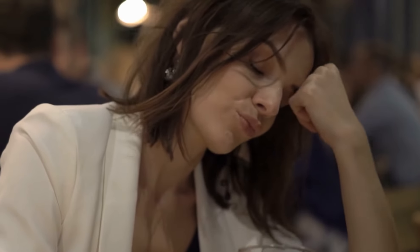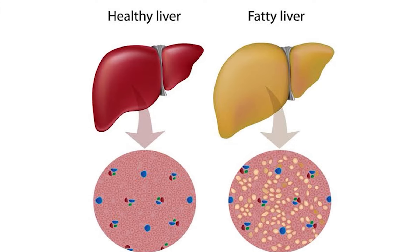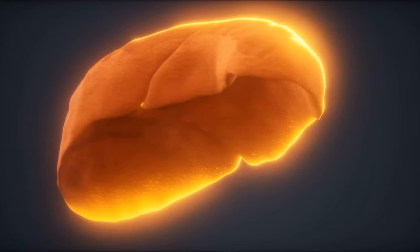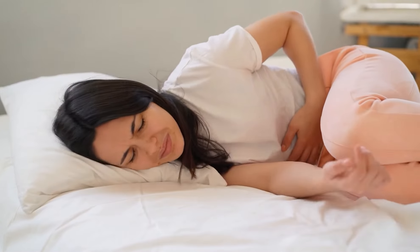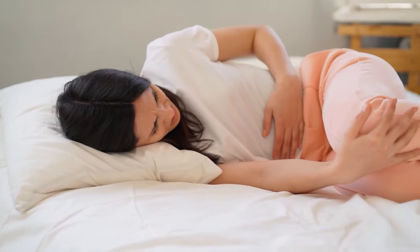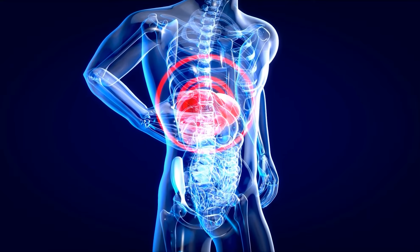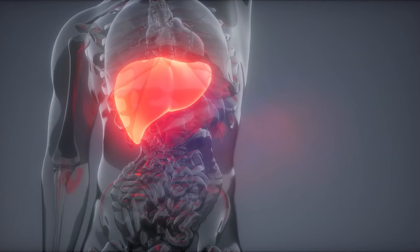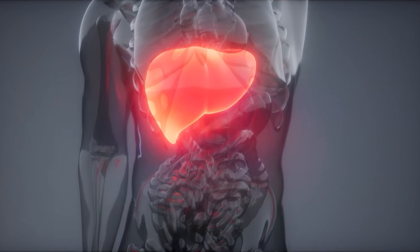NAFLD is a type of fatty liver disease that isn't caused by drinking too much alcohol. There are two types. The first is simple fatty liver, characterized by fat in the liver but little or no inflammation or damage to the liver cells — it seldom progresses to causing liver damage. The second is non-alcoholic steatohepatitis, or NASH, in which you have inflammation, liver cell destruction, and fat in your liver. Fibrosis, or scarring of the liver, is caused by inflammation and liver cell destruction, and cirrhosis or liver cancer may develop because of NASH.